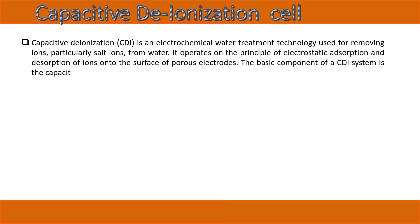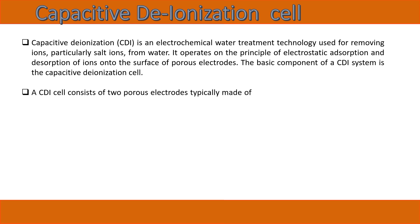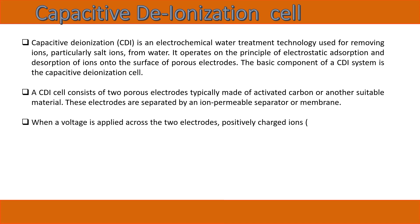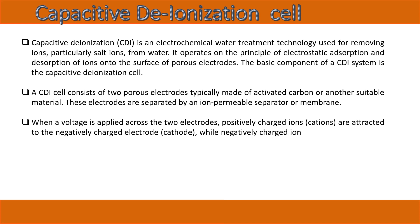The basic component of a CDI system is the capacitive deionization cell. A CDI cell consists of two porous electrodes, typically made of activated carbon or another suitable material. These electrodes are separated by an ion-permeable separator or membrane. When a voltage is applied across the two electrodes, positively charged ions (cations) are attracted to the negatively charged electrode (cathode).